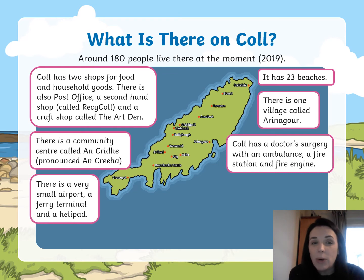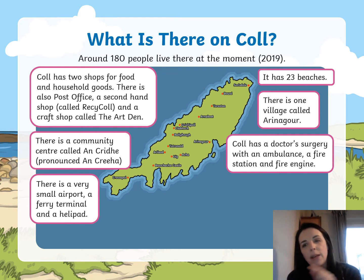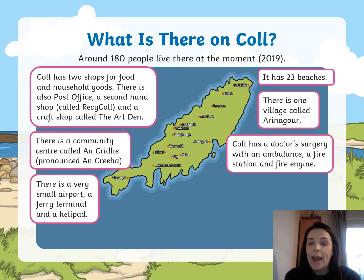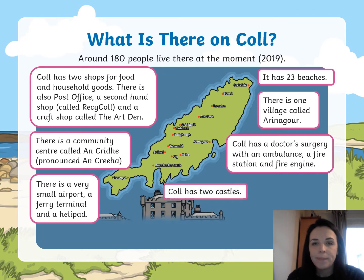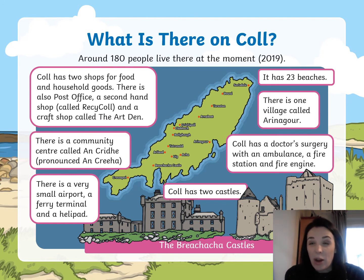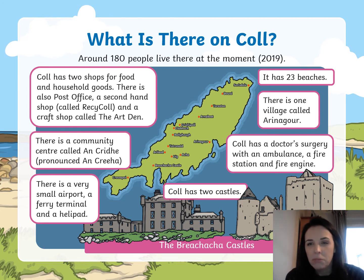There's a very small airport and a ferry terminal — that's where the ferry comes in and loads or unloads its passengers. And a helipad, which is where a helicopter would land. And it has two castles — strange for somewhere so small to have two castles. I wonder where they would be.